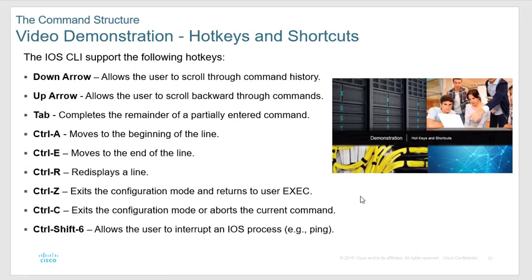If you fat-finger a command and type in the wrong thing, sometimes the router has no idea what you want to do. Instead of giving you an error, it assumes you're trying to do a DNS search, locks up, says 'translating', goes out and tries to look for whatever you typed, and locks up the router for about 30 seconds. You can hit Control-Shift-6 to get out of that, or when you first go to global mode, type 'no ip domain-lookup' to disable it.